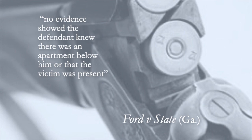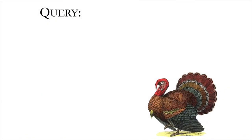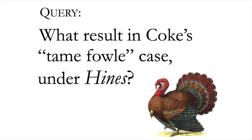Query whether Hines would have been convicted of any crime had he not had that felony DUI on his record. Another query: what result in Cook's tame fowl case under Hines? It seems that the Hines approach would approve a felony murder instruction if there were evidence that the defendant knew others were in the area.